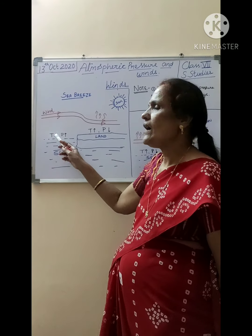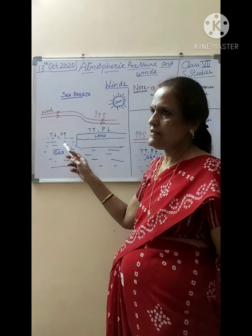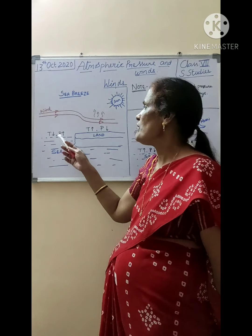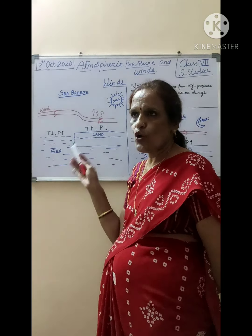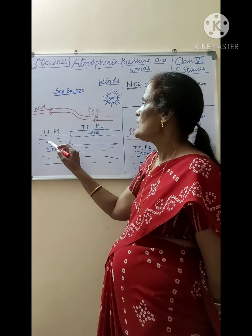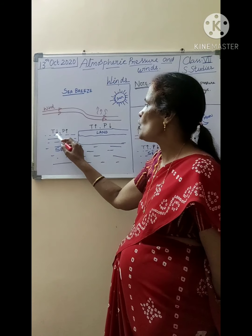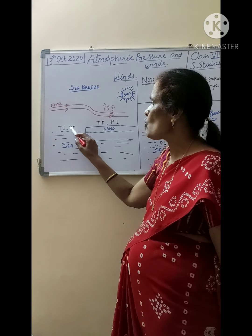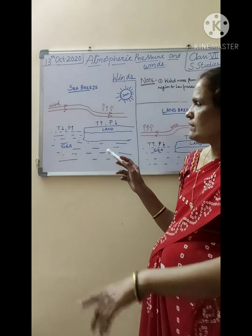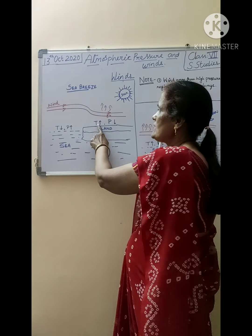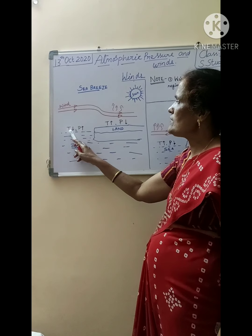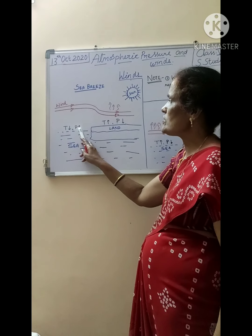Now we will move to the sea side. Here the temperature is low. Wherever the temperature is low, pressure is high — the opposite. Temperature is high, pressure is low. Temperature is low, pressure is high.